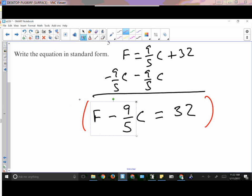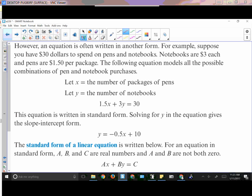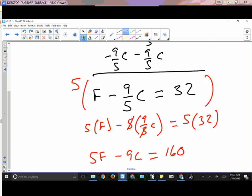That means I would have 5 times F minus 5 times 9/5C = 5 times 32. So I would end up with 5F - 9C = 160. Most of the time, they are going to expect you to change it into something that looks like this, where you are not going to have fractions. Although, according to the rule, it is perfectly acceptable.